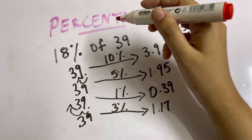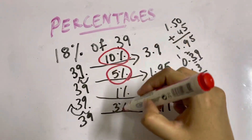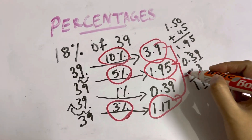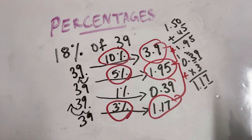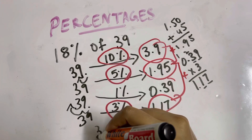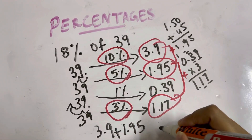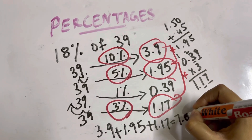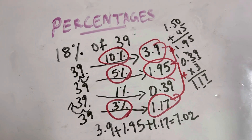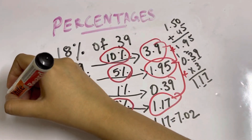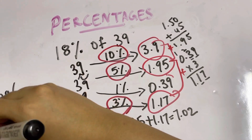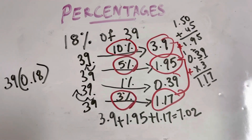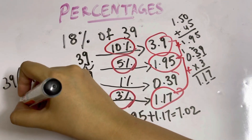For 18%, add 10%, 5%, and 3%: 3.9 plus 1.95 plus 1.17 equals 7.02. Let's check in our calculators: 39 multiplied by 0.18 equals 7.02 — confirmed!